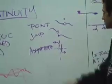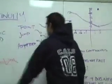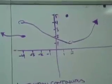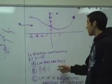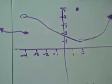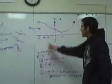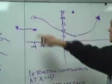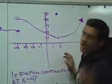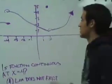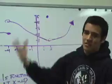We also have jump discontinuities and asymptotes as other forms. Looking at a graph example: is the function continuous at x equals negative 4? The limit does not exist because there's a jump discontinuity there. Plugging in x equals negative 4, the value equals 2, but since the limit at negative 4 does not exist, the function is not continuous — you just can't jump down there.